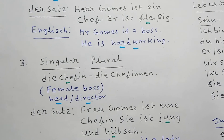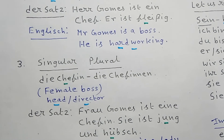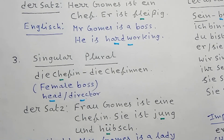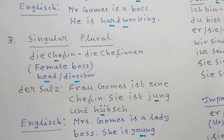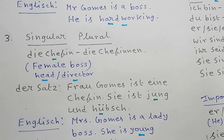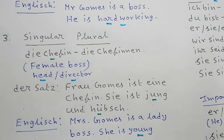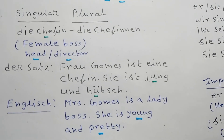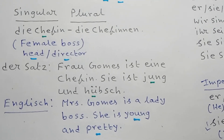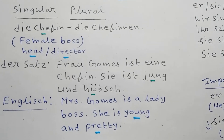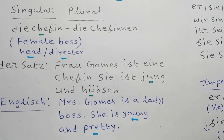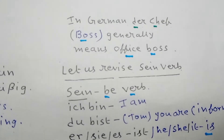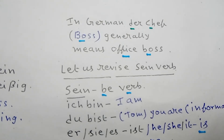Number three, singular plural: Die Chefin, plural die Chefinnen. English meaning: female boss, female head, or director. Now German sentence: Frau Goms ist eine Chefin. Sie ist jung und hübsch. English: Mrs. Goms is a lady boss. She is young and pretty. Note: Der Chef, or boss, generally means office boss.